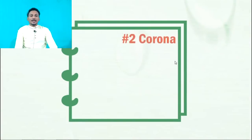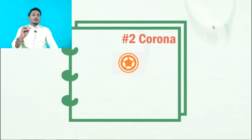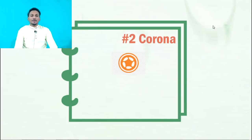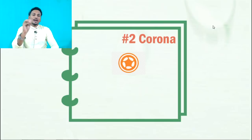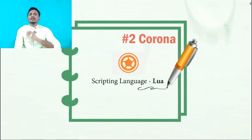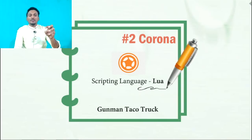For example, the game 'Badland' has been developed with the help of Cocos 2D. The second game engine is Corona. It's purely for 2D games and can be a great first choice for beginners. It has many helpful plugins, and the scripting language it uses — Lua — is very easy to learn. The game 'Taco Truck' has been developed with the help of Corona 2D.